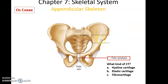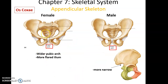The joint that connects the two os coxae together is called the pubic symphysis — a cartilaginous joint with a big thick piece of cartilage, which is fibrocartilage. Then there's an angle between the two pubis parts of the os coxae called the pubic arch. Male and female hip bones or os coxae are structurally different, mainly to help increase the outlet for childbirth in the female.